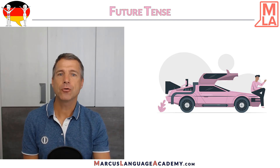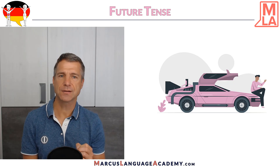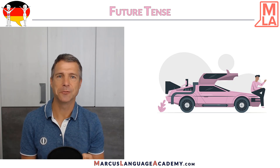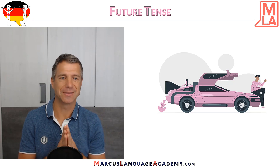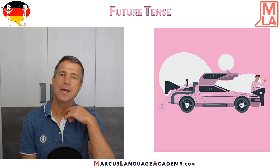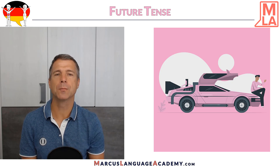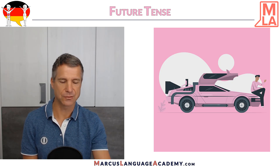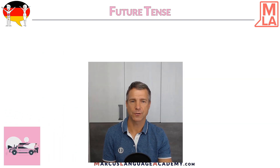In my course I use a special color for the future tense, and this is pink. So we have a pink future — this is my color in my course. Therefore, in every image I use, the background color will be pink. Let's see how the future tense works.